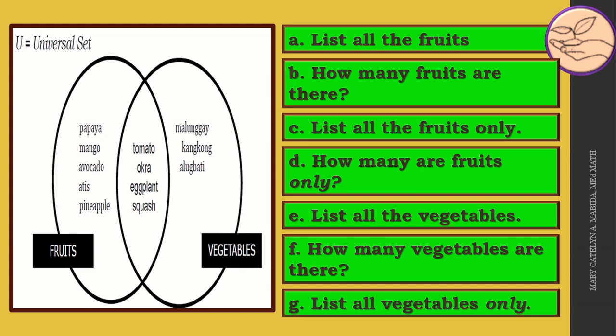A. List of the fruits. B. How many fruits are there? C. List of the fruits only. D. How many are fruits only? E. List of the vegetables. F. How many vegetables are there? G. List all vegetables only. You can pause this video to write down your answer.